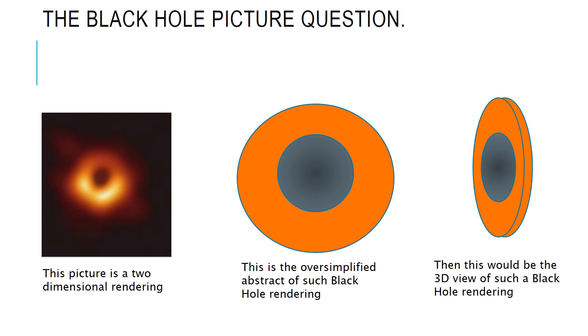So I took this picture, which gives you a two-dimensional rendering. I simplified this with a simple abstract with the black hole in the middle and the corona around it. Then I flipped it by 90 degrees, and you can see it has a disk shape with the black hole in the middle and Saturn-like rings around it.